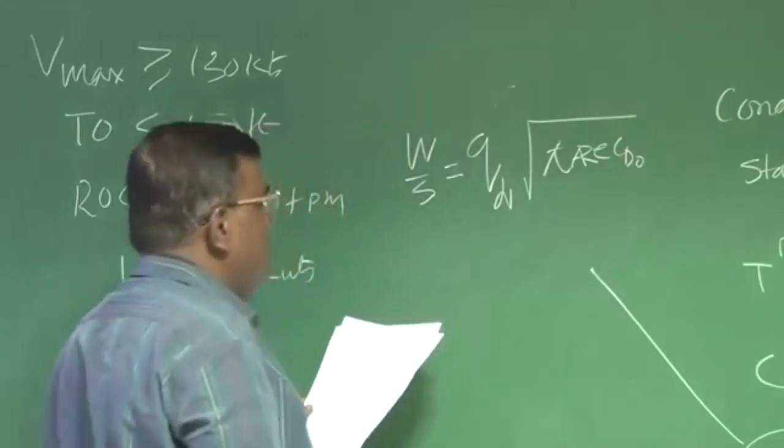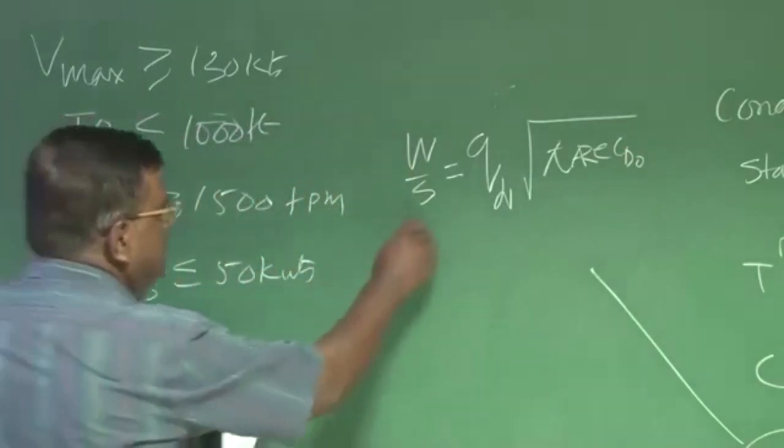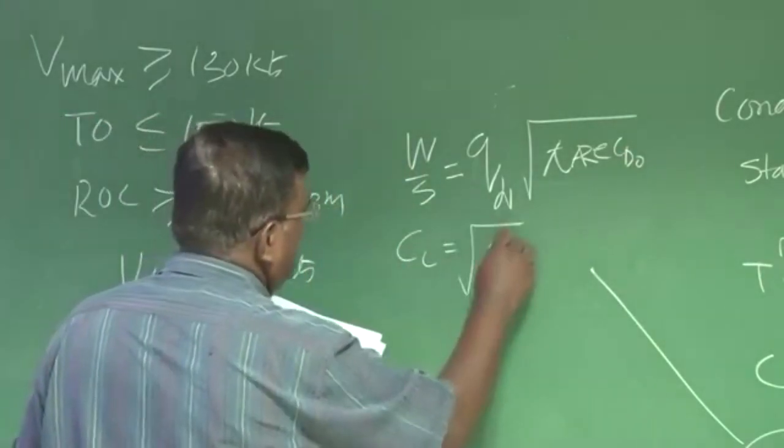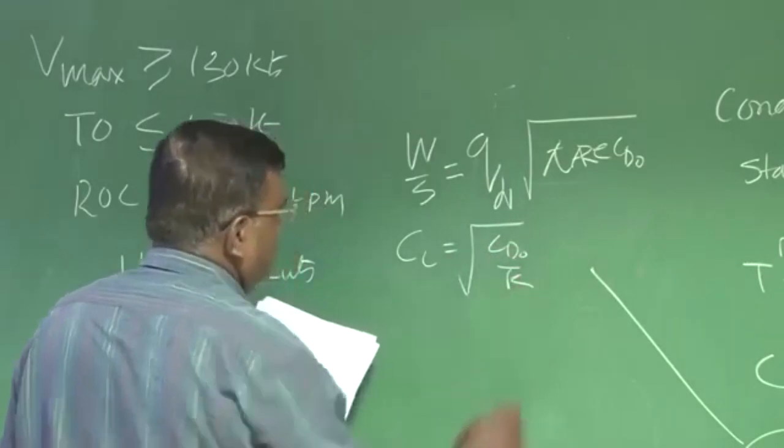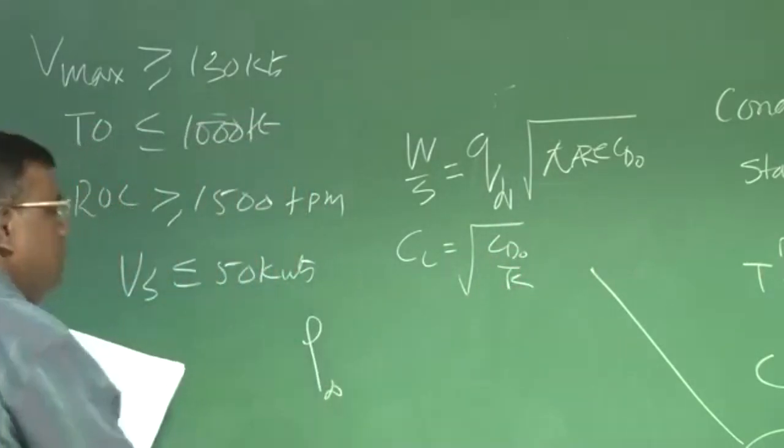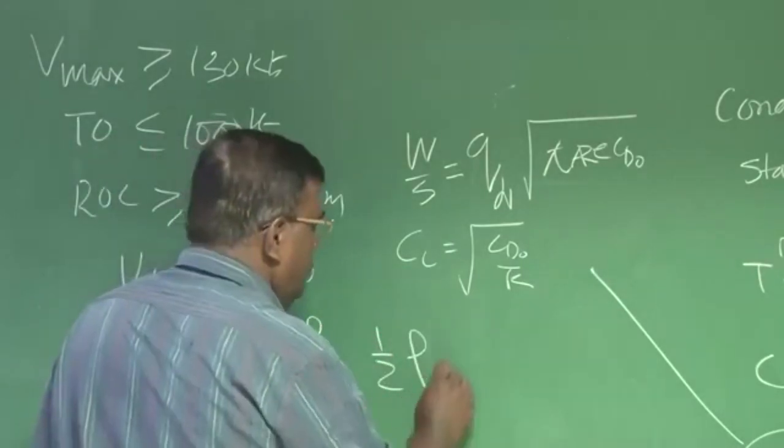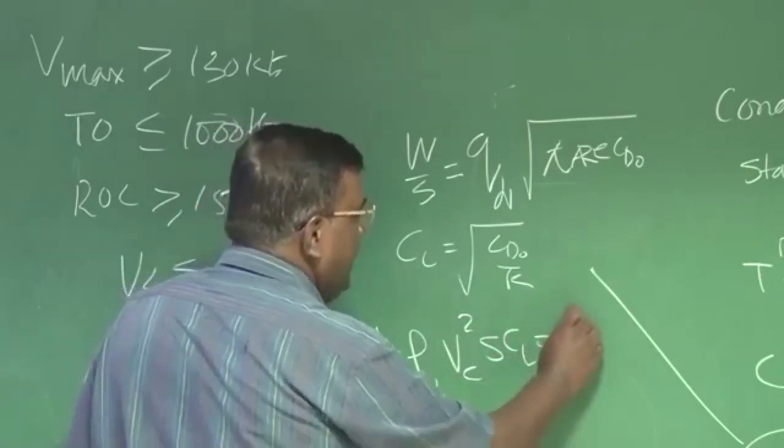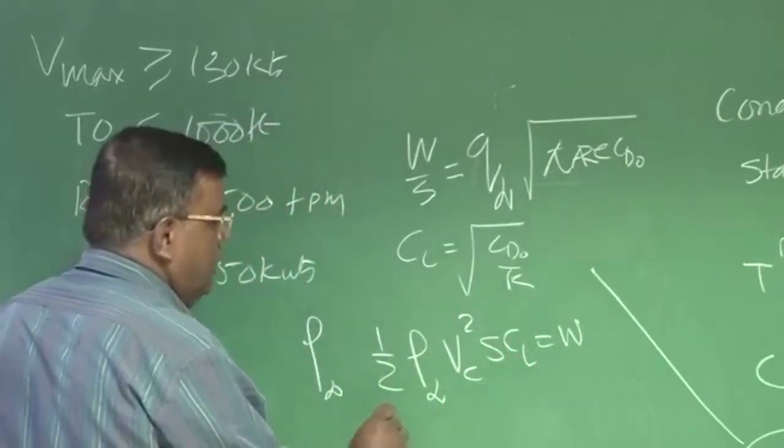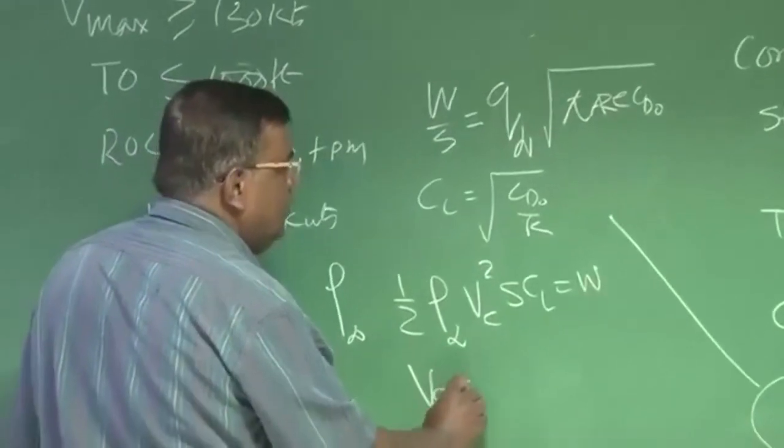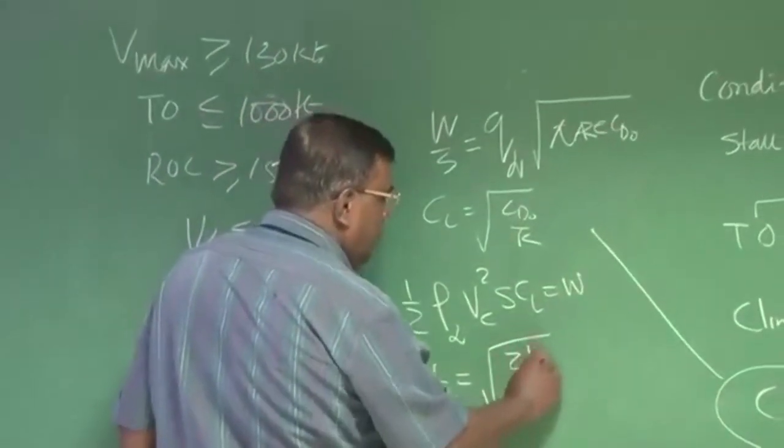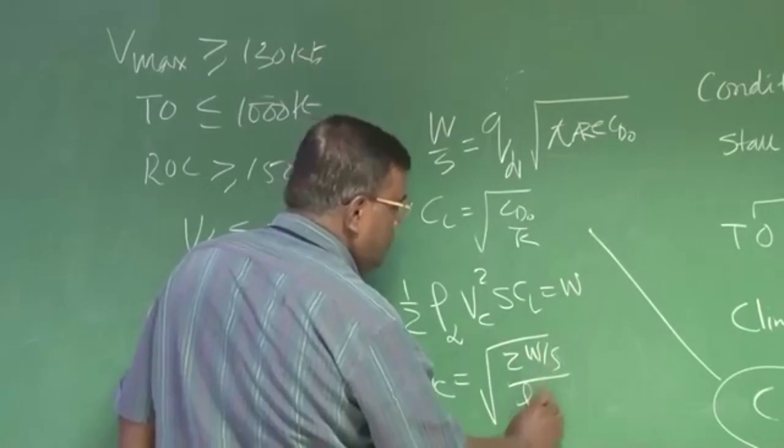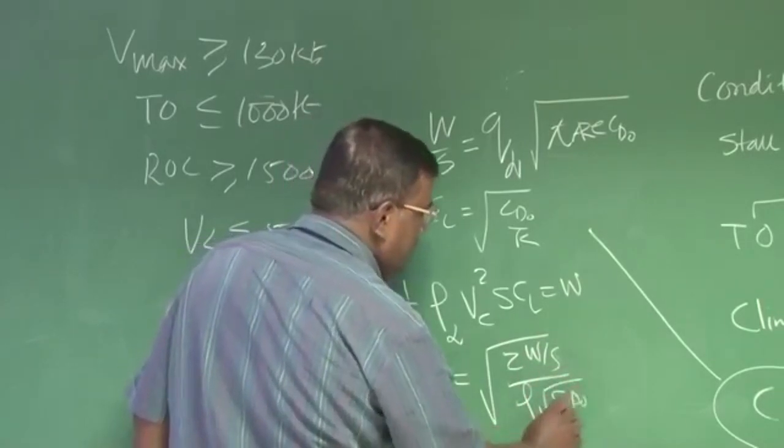This assumes CL equal to under root CD0 by K. So if you have chosen an altitude where you will be cruising primarily, then half rho V cruise square S CL will be equal to weight or V cruise will be square root of 2 W by S by rho CL, means CD0 by K.